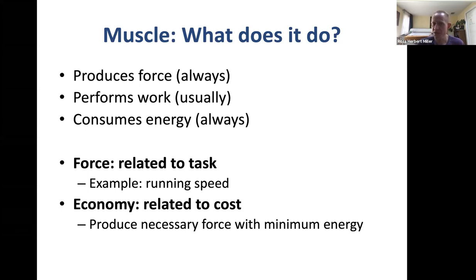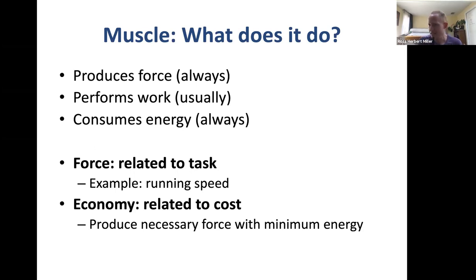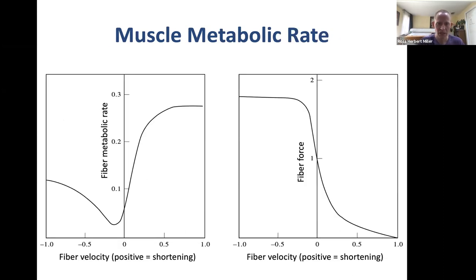In sub-maximal effort tasks like long-distance running — 5Ks, marathons — we're not just interested in speed but in the economy of moving at that speed. Can we minimize the metabolic energy consumed to move at a certain speed? This is where operating muscles at relatively slow contraction velocities, even though the body is moving fast — through a short moment arm or a long springy tendon — becomes a good thing.